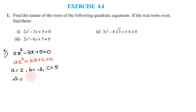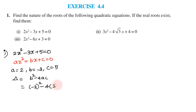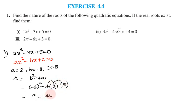Finding the discriminant: Δ = b² - 4ac = (-3)² - 4 × 2 × 5 = 9 - 40 = -31. Since the discriminant is negative, no real roots exist.